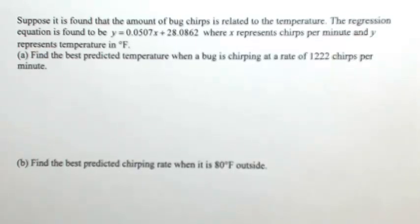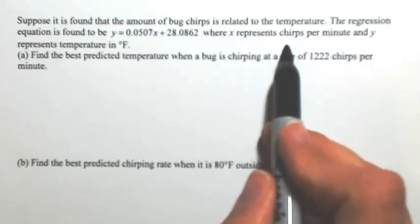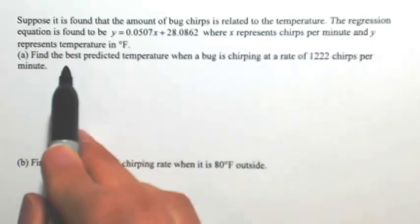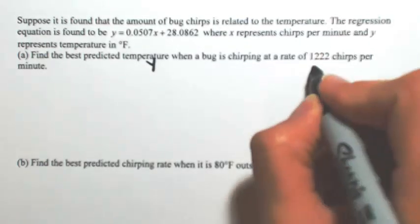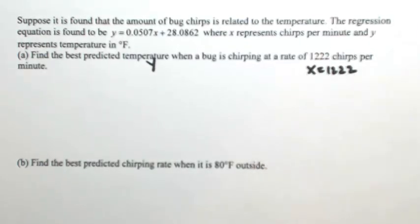So in answering this question, make sure you have the right variables. So x is the chirps, y is the temperature. So if I'm trying to find the best predicted temperature, I'm trying to find the y, given that x is equal to 1,222.